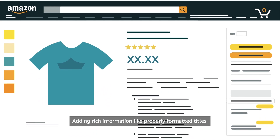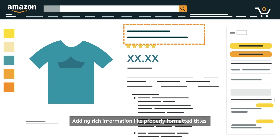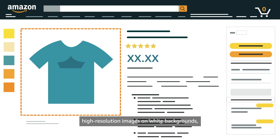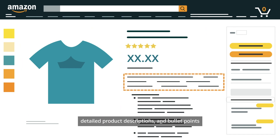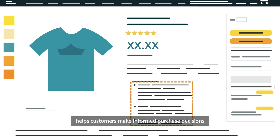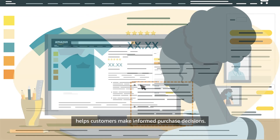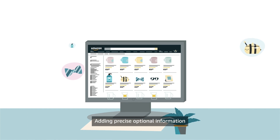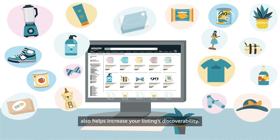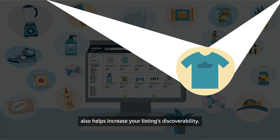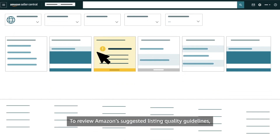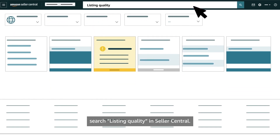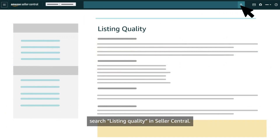While creating a listing, follow Amazon's quality standards. Adding rich information — like properly formatted titles, high-resolution images on white backgrounds, detailed product descriptions and bullet points — helps customers make informed purchase decisions. Adding precise optional information also helps increase your listing's discoverability. To review Amazon's suggested listing quality guidelines, search Listing Quality in Seller Central.